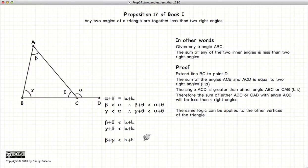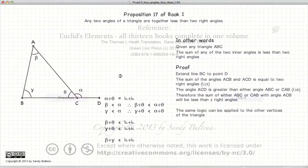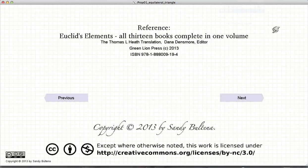So there we have just demonstrated that the sum of any two angles within a triangle is less than two right angles. And that concludes this video presentation. To see the next presentation just click the next button. Thank you.